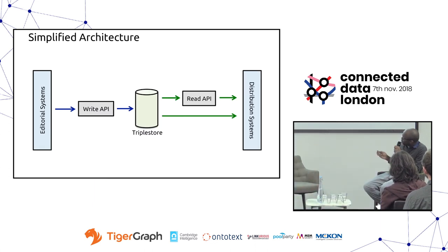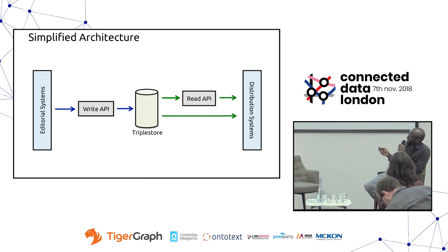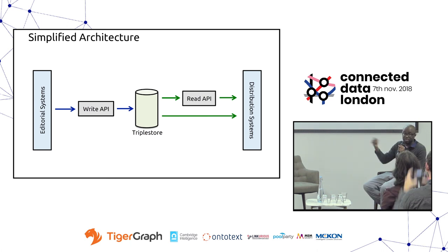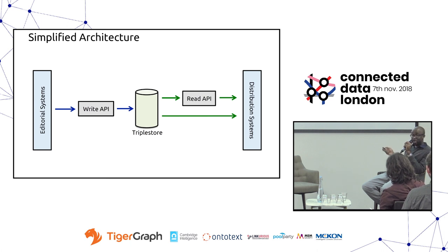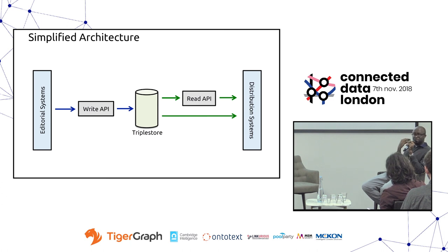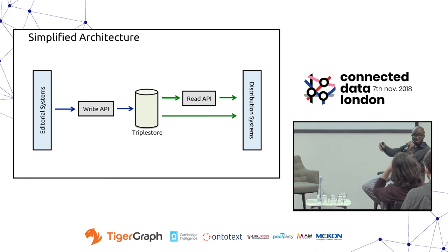Our team maintains the central triple store where all this data lives and the APIs around that data. Our clients are typically editorial systems manned by journalists and distribution systems used to display data to users. We have central triple store clusters with APIs on both ends. To write data, we have a write API that handles access control and validation — we check that data meets business rules and is the right format before ingesting it. On the read side, we have a fairly rich, flexible read API that exposes this data to internal clients, who query us using normal HTTP with query parameters, and behind the scenes we generate SPARQL and send that to the triple store.